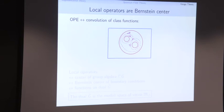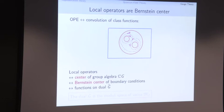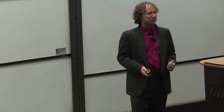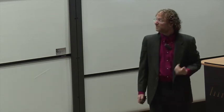Local operators in Yang-Mills theory are exactly the center of the group algebra — the Bernstein center of the category we input as boundary conditions — or equivalently, functions on the dual. So the dual is the moduli space of the theory. This notion of dual is identified with moduli space in this physics framework.